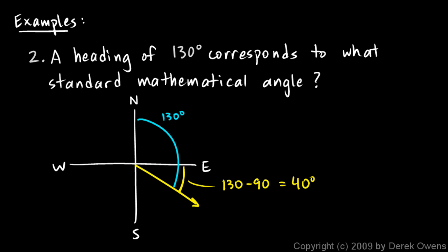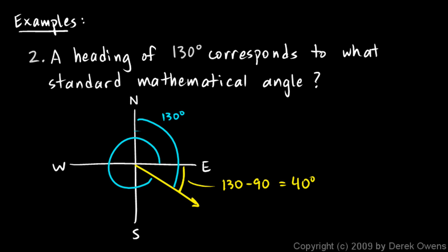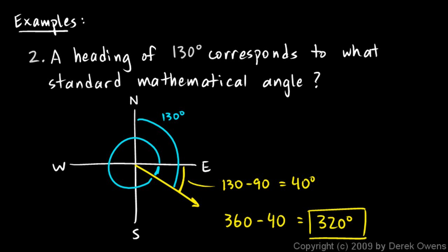That's 40 degrees south of east. To find the standard mathematical angle, we start at the x-axis and rotate counter-clockwise all the way around — but we stop 40 degrees short of a complete rotation. So we calculate 360 minus 40, which gives us 320 degrees. That rotation of 320 degrees is the answer.